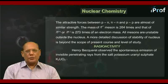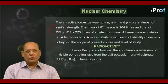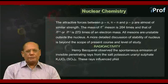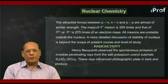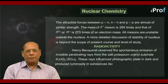That is K2UO2(SO4)2. These rays influenced photographic plates in dark and produced luminosity in substances like zinc sulfide.